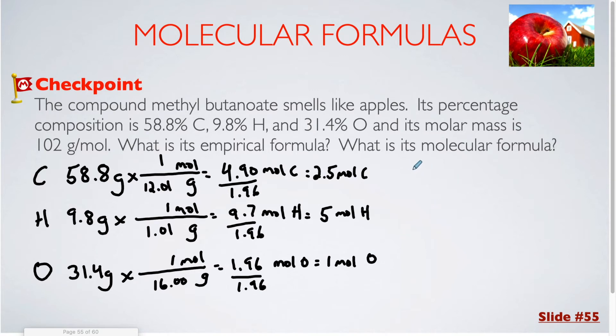So that would give me a formula of C2.5H5O. And of course I can't leave it like that, so I'm going to multiply each of these subscripts by 2. So that's going to be C5, H10, O2.